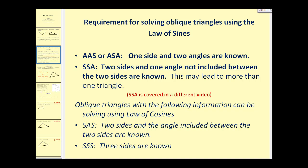Here are the requirements for solving oblique triangles using the law of sines. We must be given angle, angle, side or angle, side, angle, meaning one side and two angles are known, or side, side, angle where two sides and one angle not included between the two sides are known.